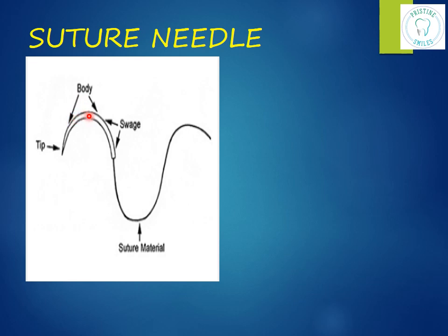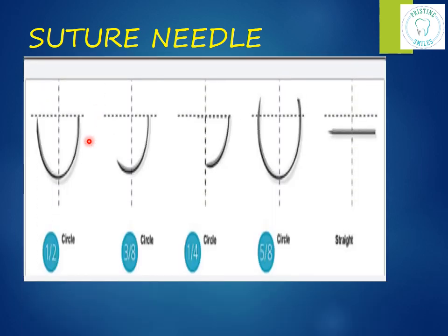The body is the widest portion of the needle — this is where the needle holder is placed to grasp the needle. Different body types include: one-half or half circle, used for smaller wounds requiring less space but more wrist movements; three-eighths, which is commonly used in the oral cavity requiring fewer wrist movements; as well as one-quarter, five-eighths, and straight.